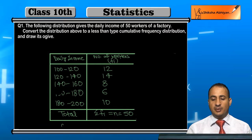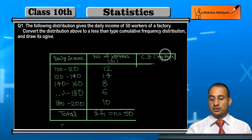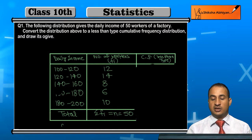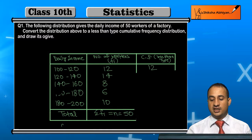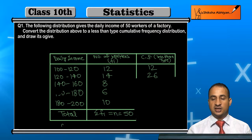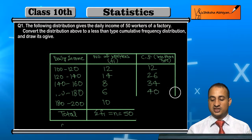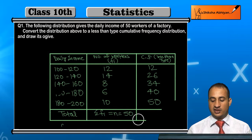Now I will give you the cumulative frequency for the less than type. The first value is 12, then 12 plus 14 equals 26, plus 8 equals 34, plus 6 equals 40, plus 10 equals 50.